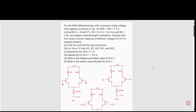Today we will solve this numerical problem. There are three cases. In the first case, the input common mode voltage is zero volts. In the second case, it changes to one volt, and in the third case, it's minus 0.2 volts. The supply voltage is plus/minus 1.5 volts. μn·Cox·(W/L) is 4 mA/V², and Vth is 0.5 volts.